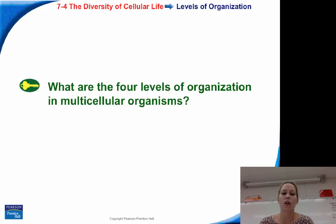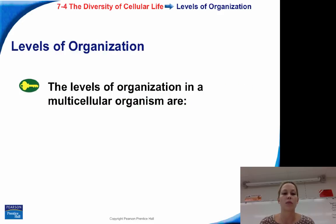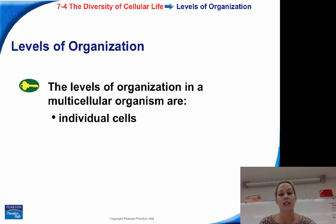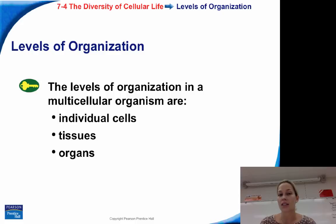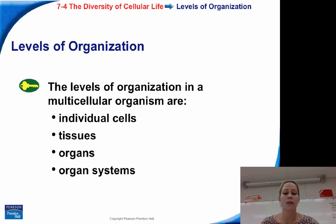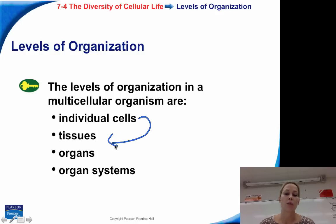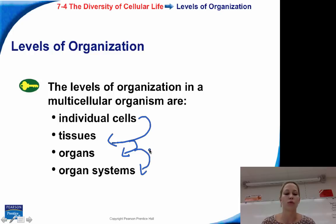What are the four levels of organization in multicellular organisms? The four levels are individual cells, tissues, organs, and organ systems. Life starts at the cellular level, so individual cells make up tissues. Tissues make up organs, and organs make up our organ systems. They all flow together.